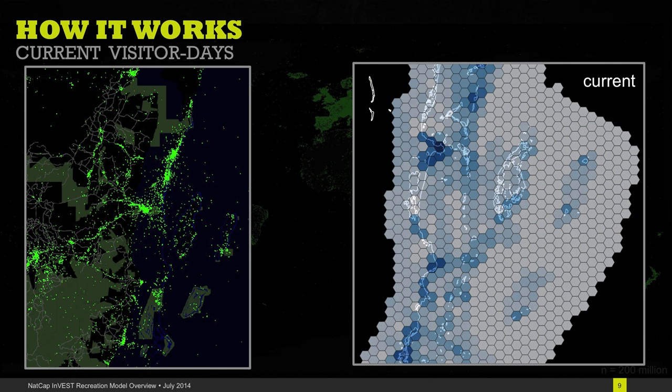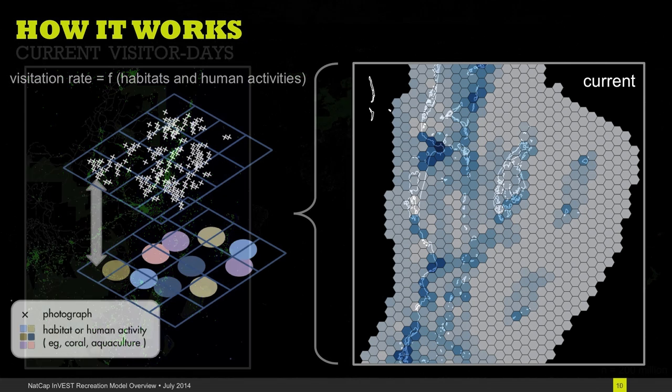The InVEST recreation model allows you to use those densities of photos to plot current visitation in terms of the number of user days across the landscape, and it also lets you relate that density of visitors back to attributes of the landscape that might be predicting where people go.